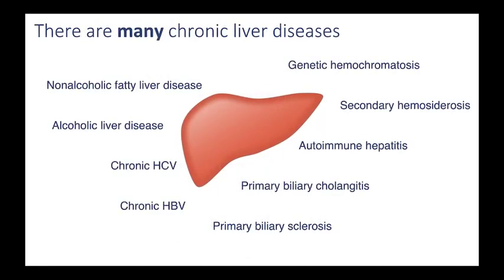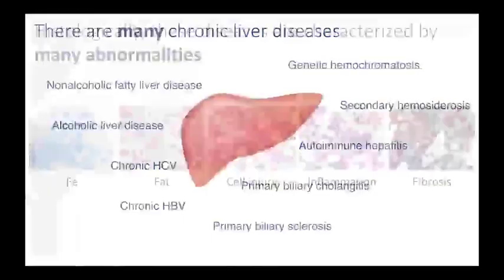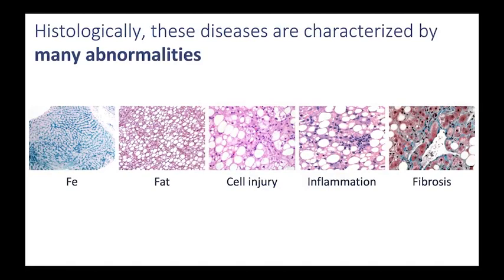Now there are many chronic liver diseases, as summarized on this slide. Rather than focus on the individual liver diseases, what I'd like to point out is that many of these diseases histologically are characterized by certain histologic abnormalities, including iron, fat, cell injury, inflammation, and fibrosis. Not all of these diseases necessarily are characterized by all of these abnormalities, but these are histologic abnormalities that are important in many of the chronic liver diseases.